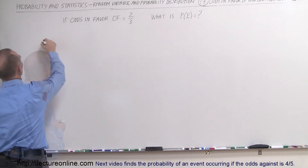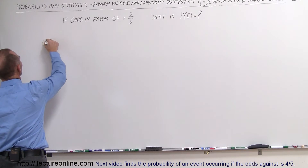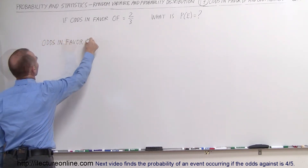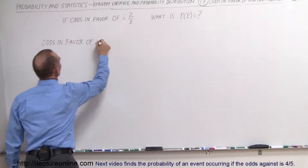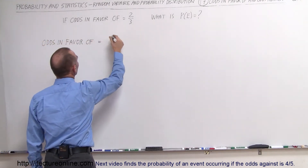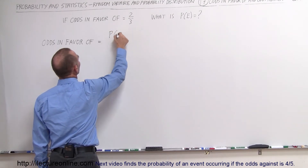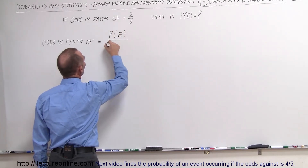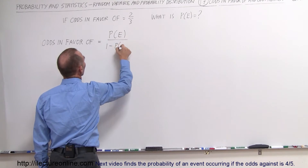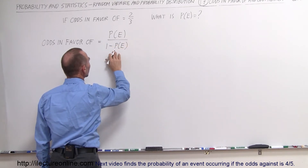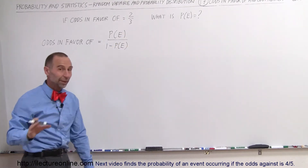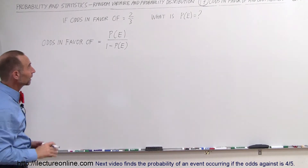The odds in favor is equal to the ratio of the probability of the event occurring divided by one minus the probability of the event occurring. We're trying to find out what that probability of the event occurring is.